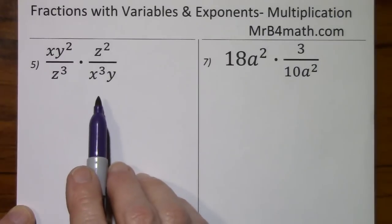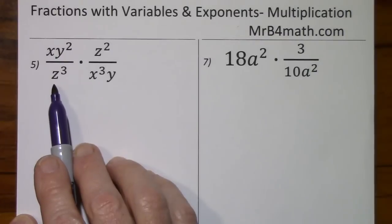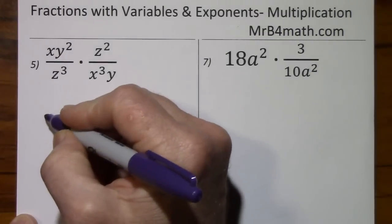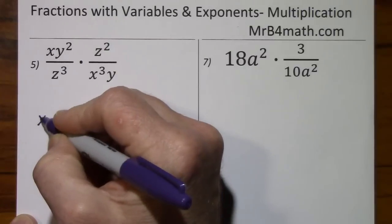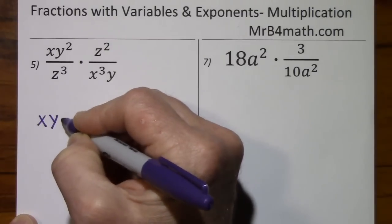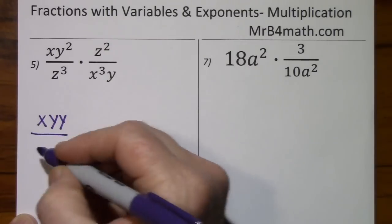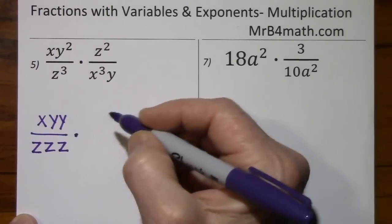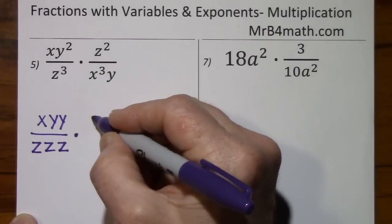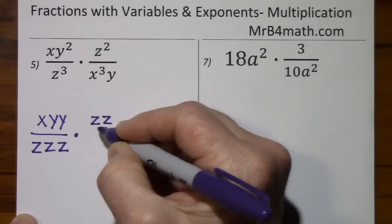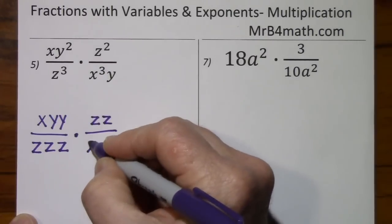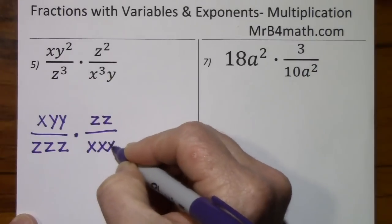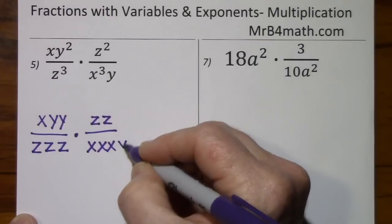I'll solve number 5 the way I've done previously, but then I'll also describe a faster way to do this. So we have x and then y times y in the numerator. We have z times z times z in the denominator. We have z times z in the numerator and then x times x times x times y.